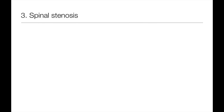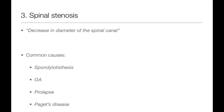In the condition of spinal stenosis, you have a decrease in the diameter of the spinal canal or the intervertebral foramina through which nerve roots arise. This could be the result of a number of conditions, including spondylolisthesis, osteoarthritis of the spine, disc prolapse, or Paget's disease.